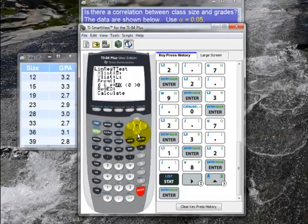The x-list is L1. The y-list is L2. Frequency is 1. Remember the alternative hypothesis was that the correlation rho for the population is not equal to zero. I'm not graphing so I don't need to store anything into reg eq. I just go to calculate and hit enter.